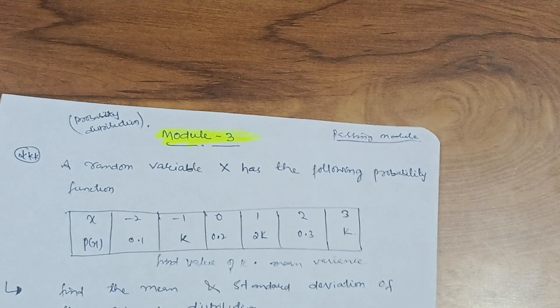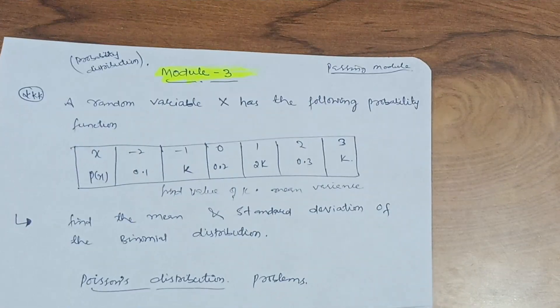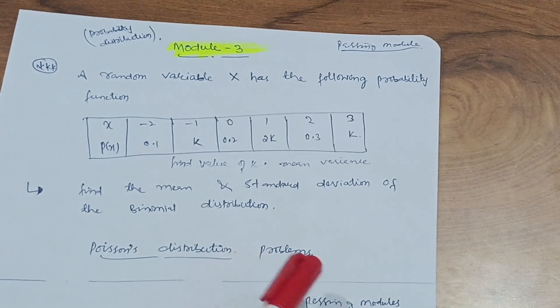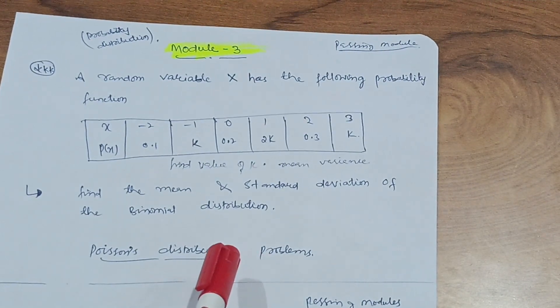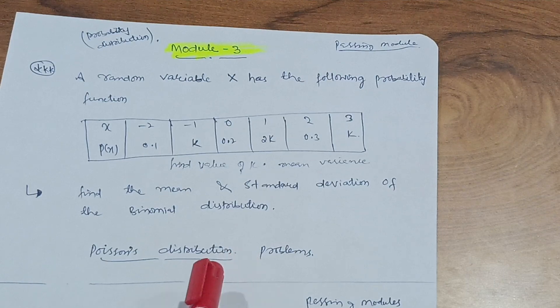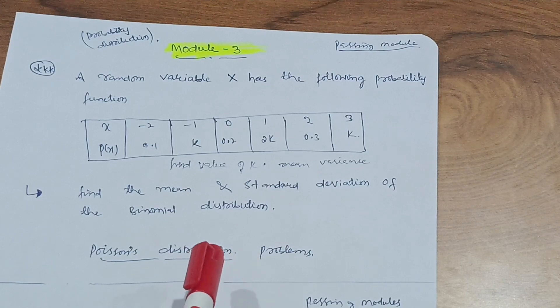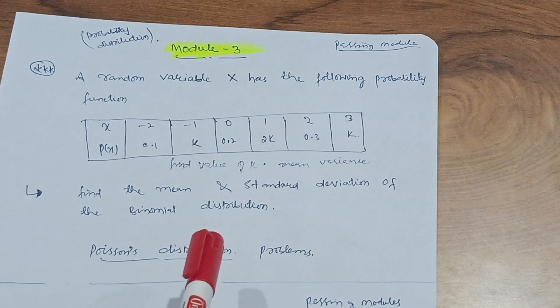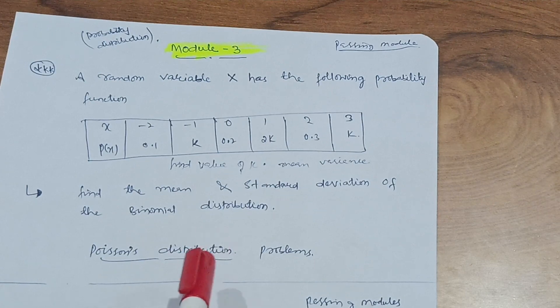And also this Poisson's distribution problems you have to go through. And also this is a passing module, my dear friends. First, second, and third are the passing modules which you have to go through. You can go through fully in these particular modules.